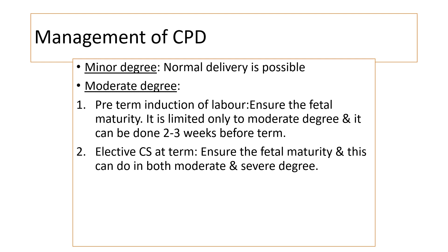Now let us see how to manage cephalopelvic disproportion. If the disproportion is of minor degree, you can try for normal labor. If there is a moderate degree of disproportion, you can go for pre-term induction of labor — inducing labor a little earlier means the size of the baby will be less and the presenting diameters will be less, allowing the baby to pass through the pelvis. Before inducing labor, ensure fetal maturity and fetal lung maturity. For moderate disproportion, you can induce labor two to three weeks before term.